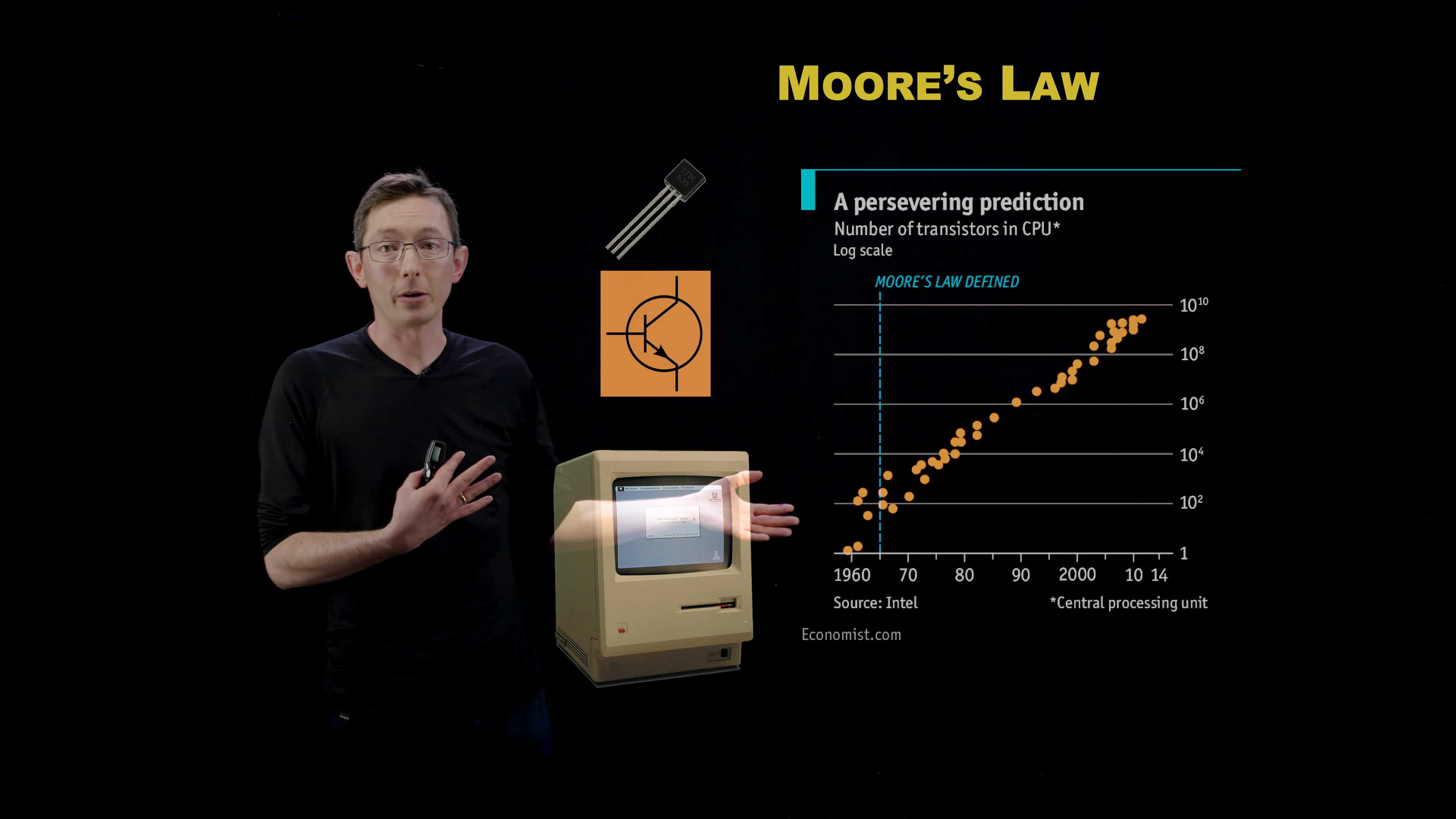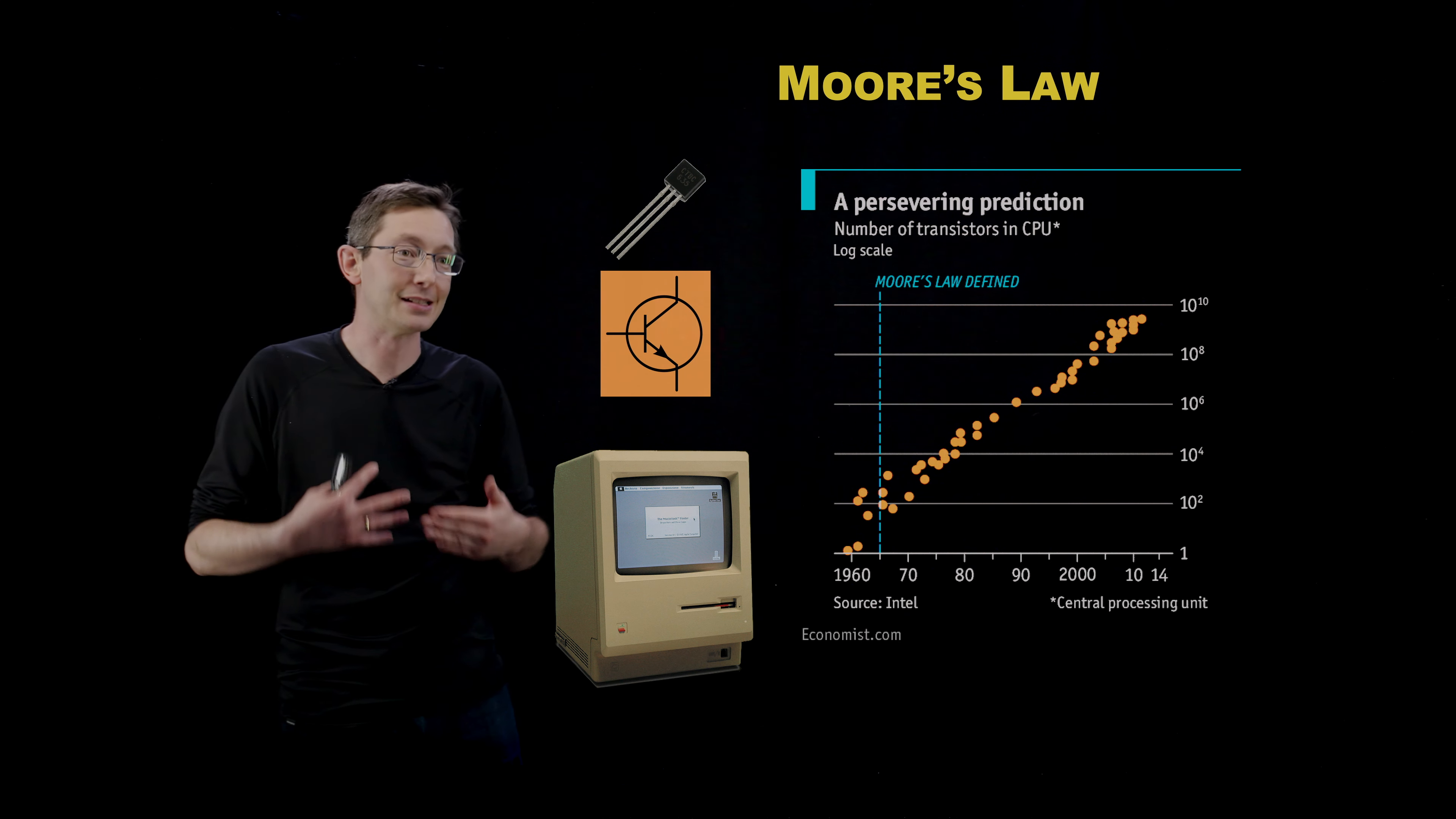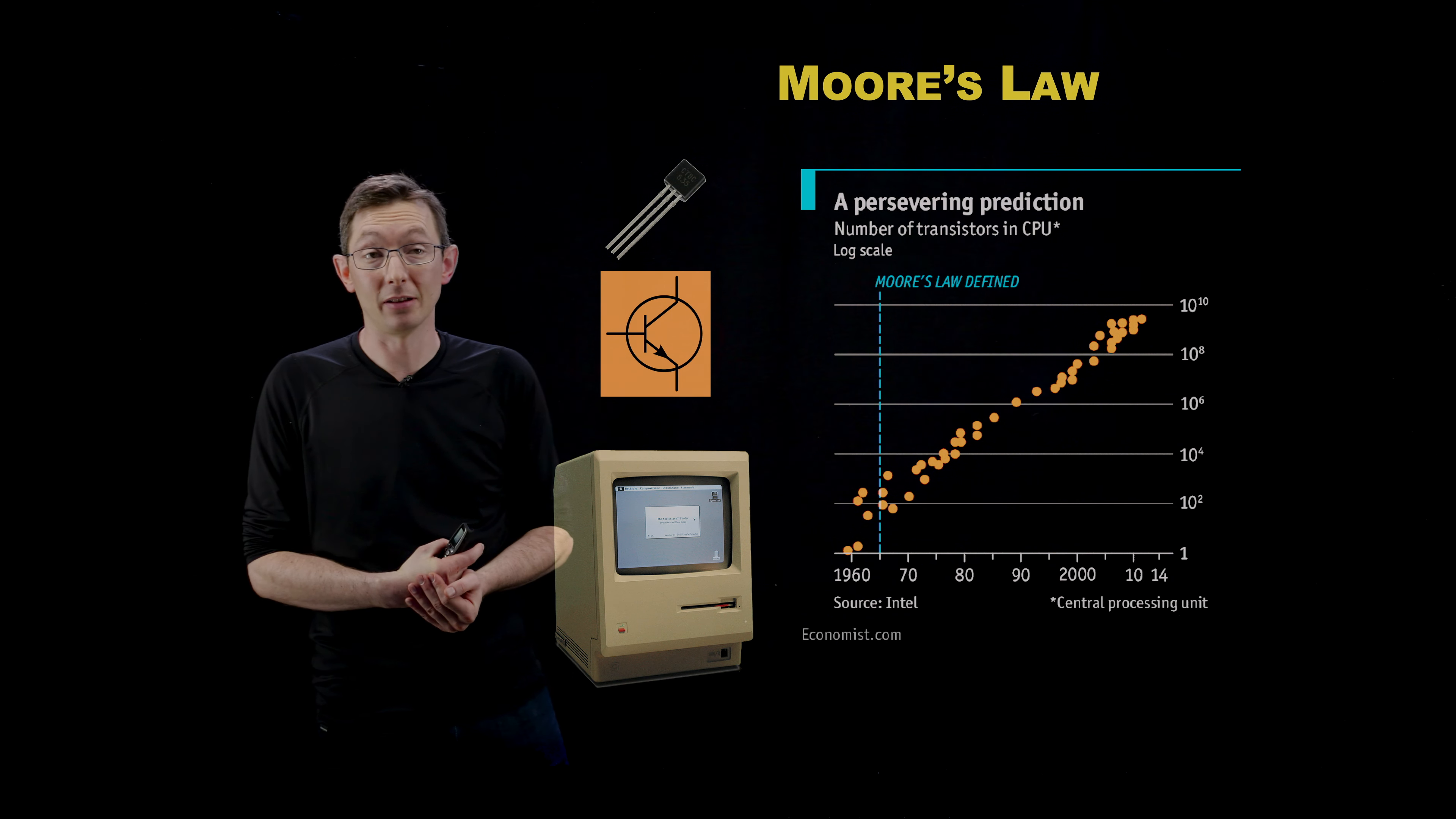Another really important area where exponential growth comes in is in Moore's law of increasing computer power. So computers are built up out of transistors. And Moore's law says, roughly speaking, that the number of transistors doubles every two years so that we get more and more powerful computers as time goes on.